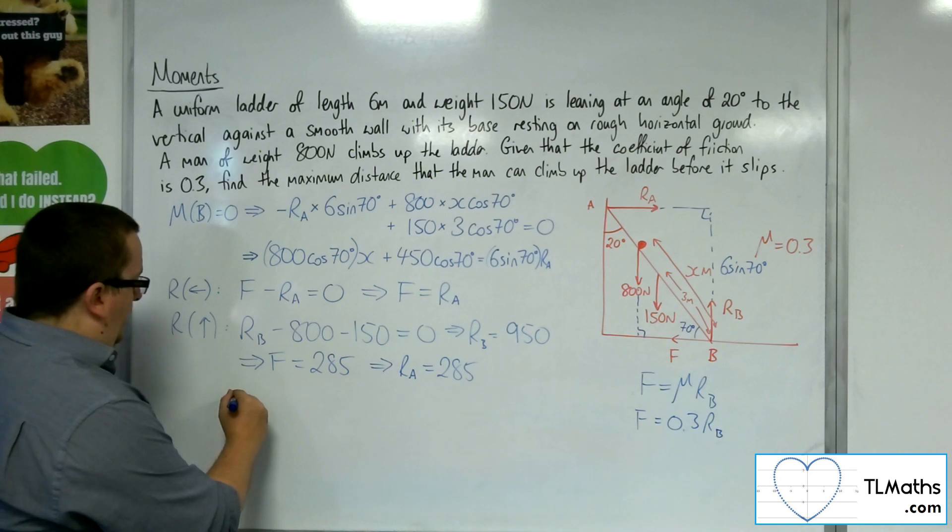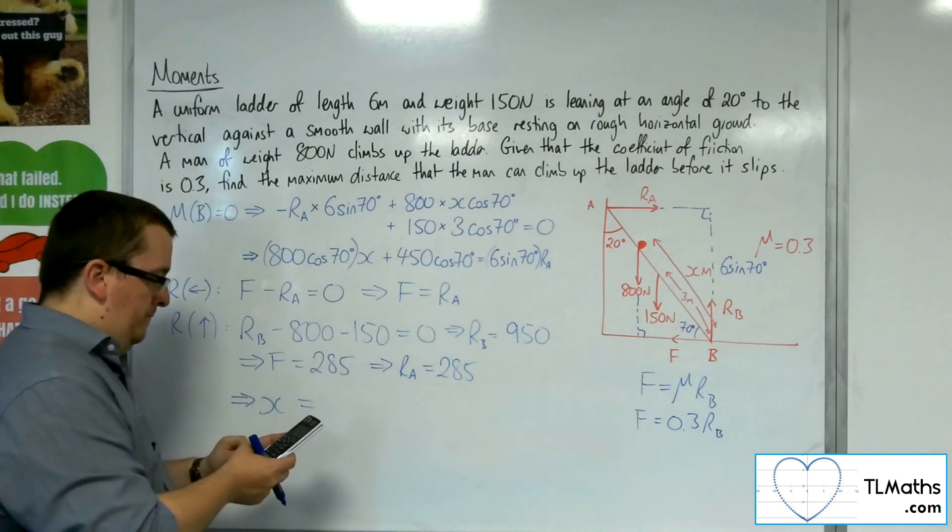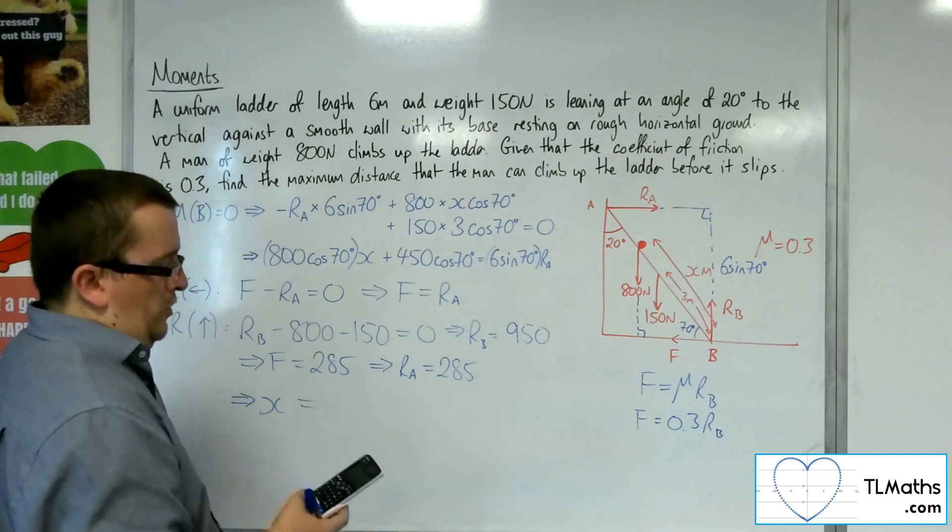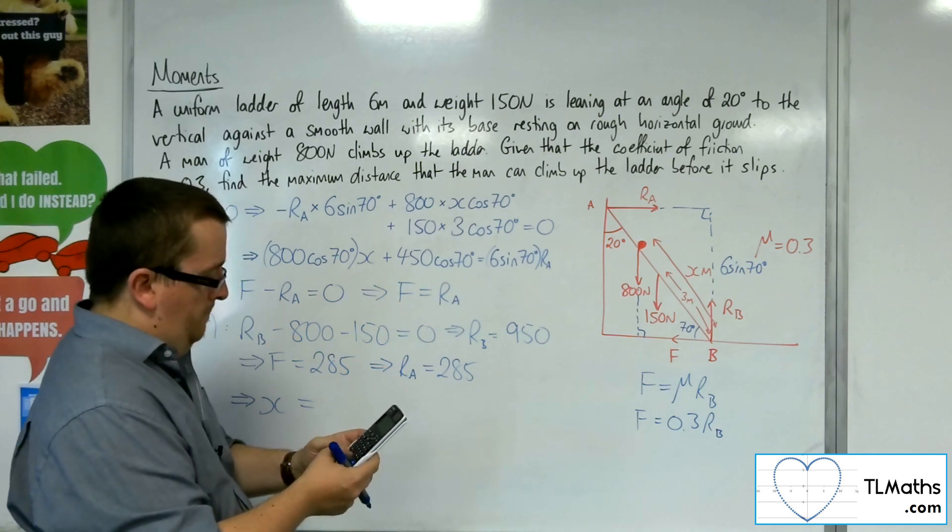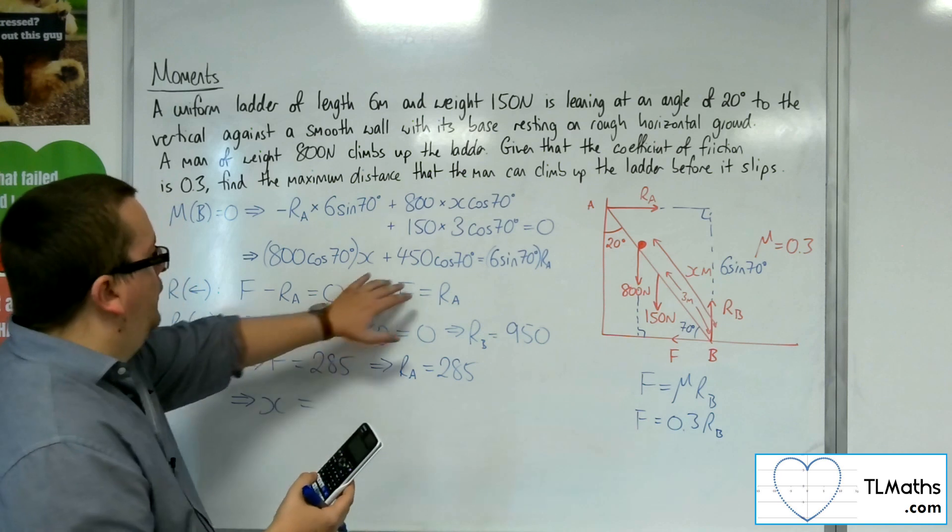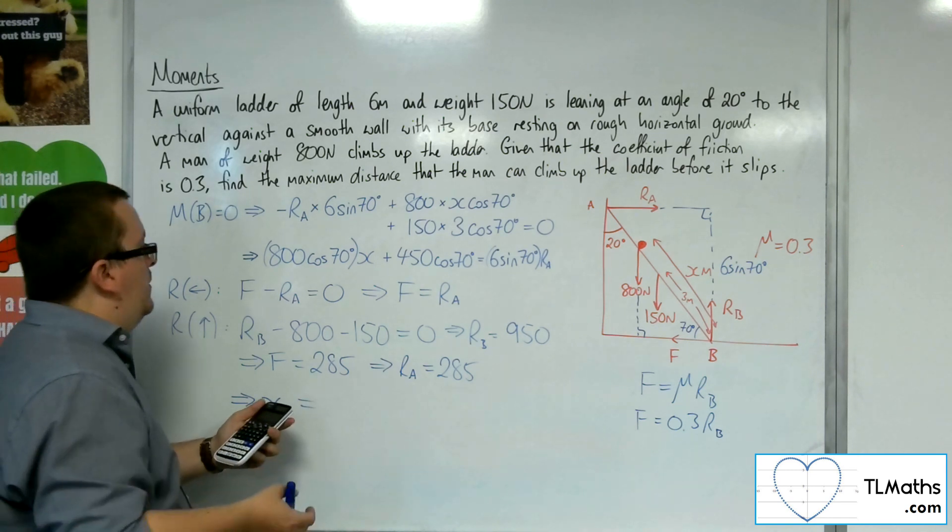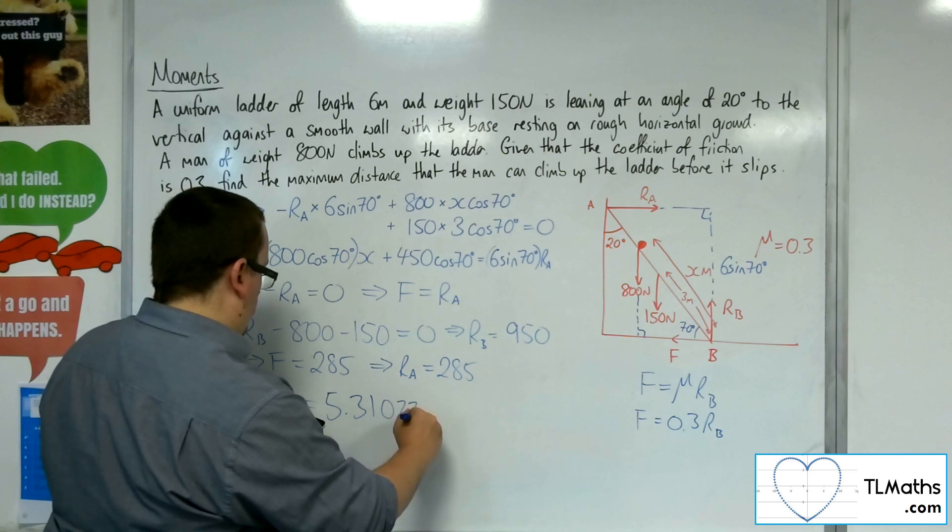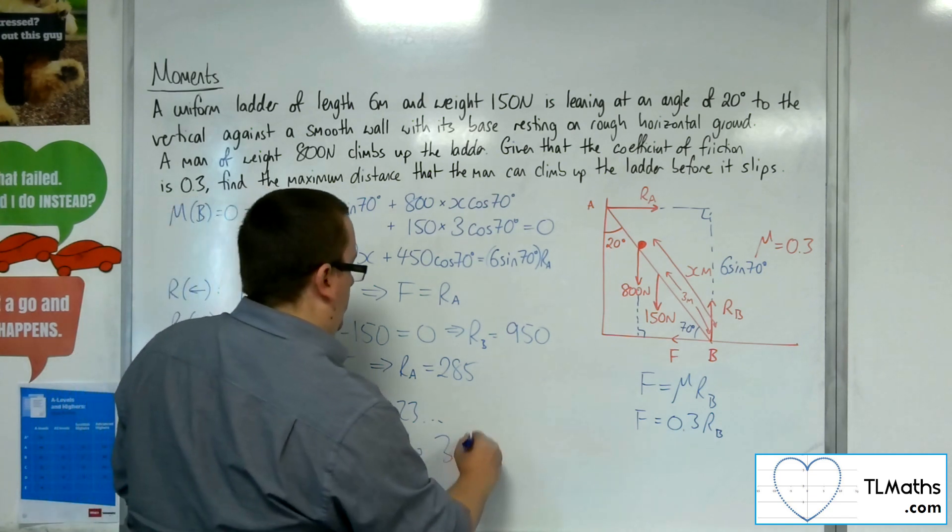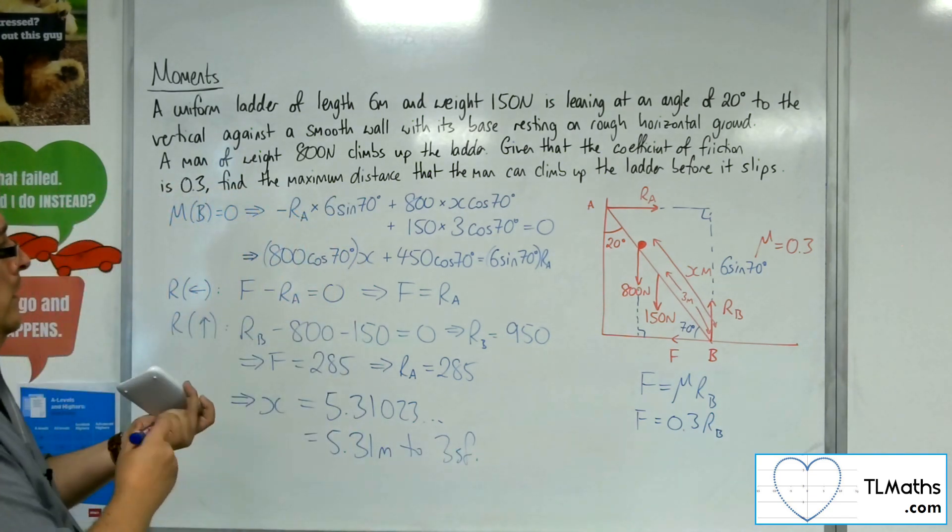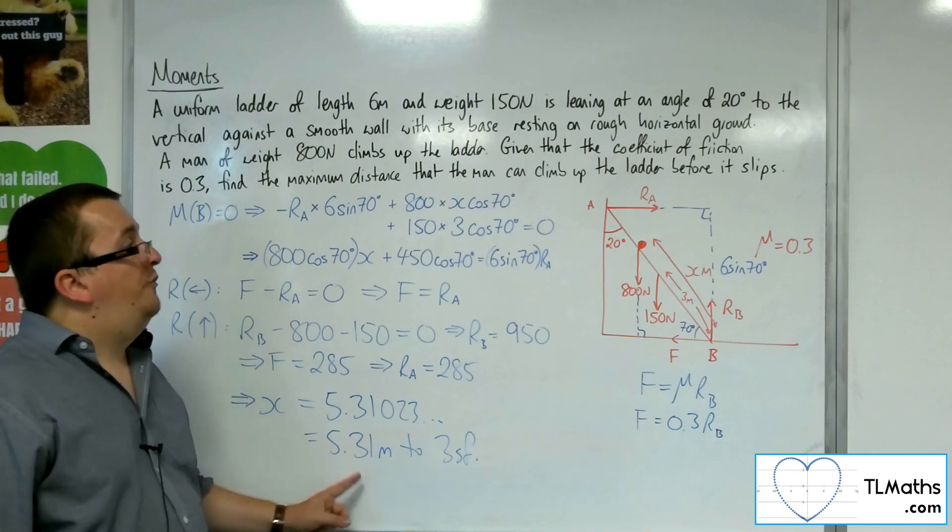So we've got the X is going to be 285 times 6 sin 70, which is 1,606.87. Take away the 450 cos 70, which is 1,452.965. Divide that by 800 times cos 70. And we get X is 5.31023, etc. So 5.31 meters to 3 significant figures. So that means that the man can climb up 5.31 meters before the ladder will slip.